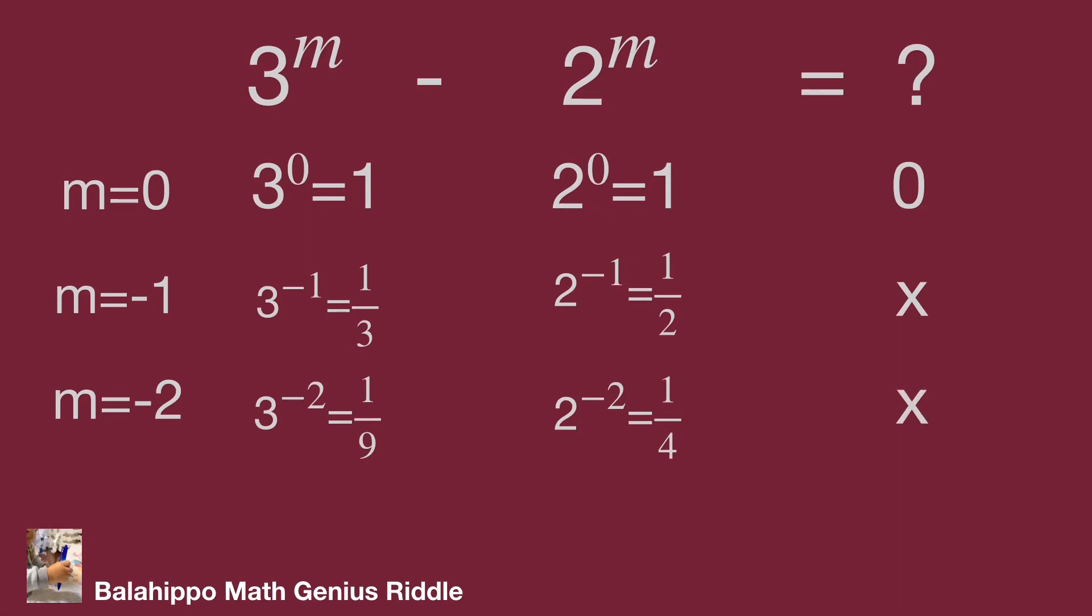While m is negative integers, then 3 power m and 2 power m are fractions and the values decrease. 3 power m minus 2 power m could not be an integer.